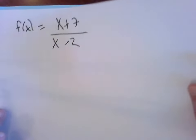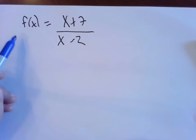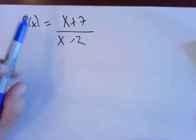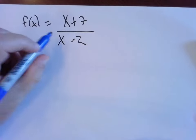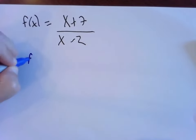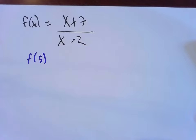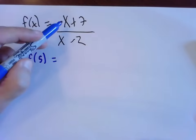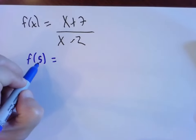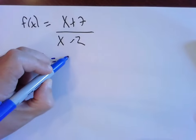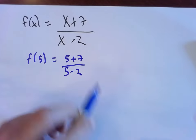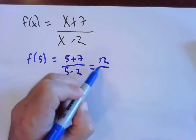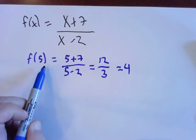Let's look at a new function — I've reused the name f, but it has nothing to do with the last one. f(x) = (x + 7)/(x - 2). It's guaranteed to be a function since it's written in one single line. What is f of 5? Replace every x with 5: (5 + 7)/(5 - 2) = 12/3 = 4. So f(5) = 4.